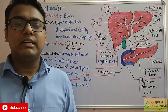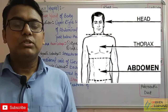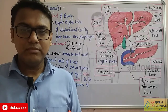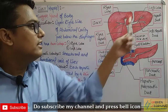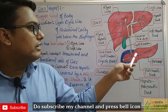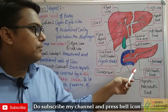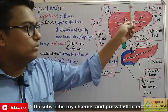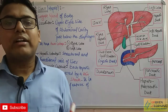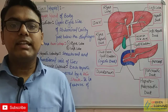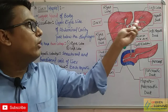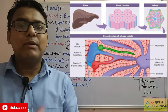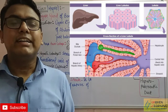The right side of the abdominal cavity is where the liver is located, just below the diaphragm. As you can see in the diagram, the liver has two lobes — a right lobe and a left lobe. Inside these lobes there are lobules called hepatic lobules.